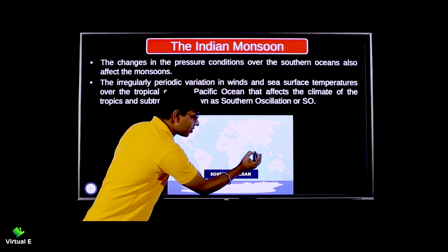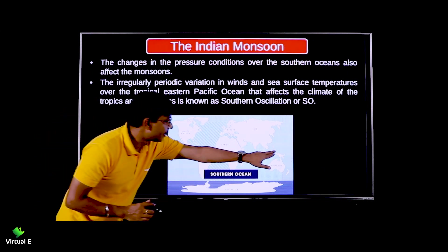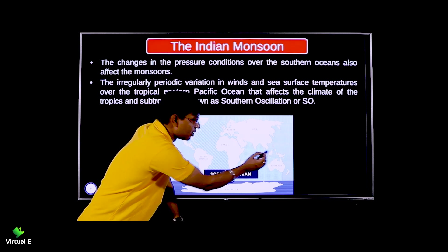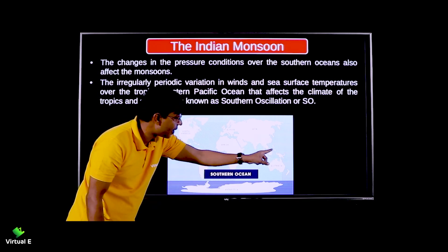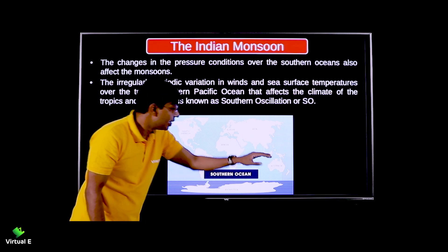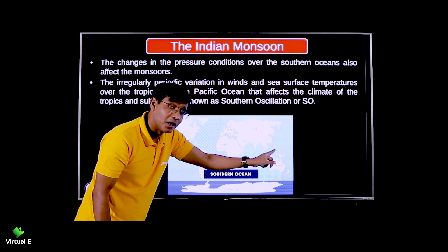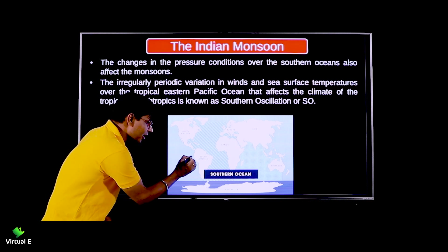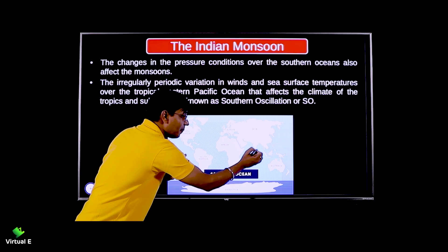In the south part, high pressure is here, so low pressure will be there. When there is low pressure, wind moves from high to low pressure, then comes back. This cycle takes about two to two and a half years, sometimes almost three years. This also impacts the monsoon, and its impact depends on El Niño. El Niño is located somewhere here, and this reversal of pressure drives the whole system.